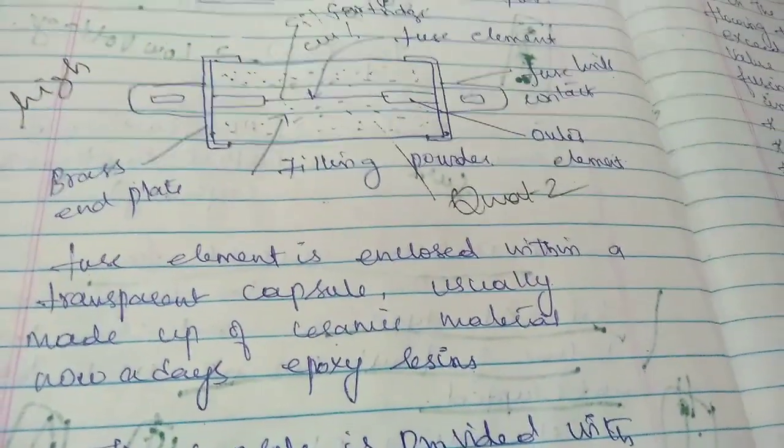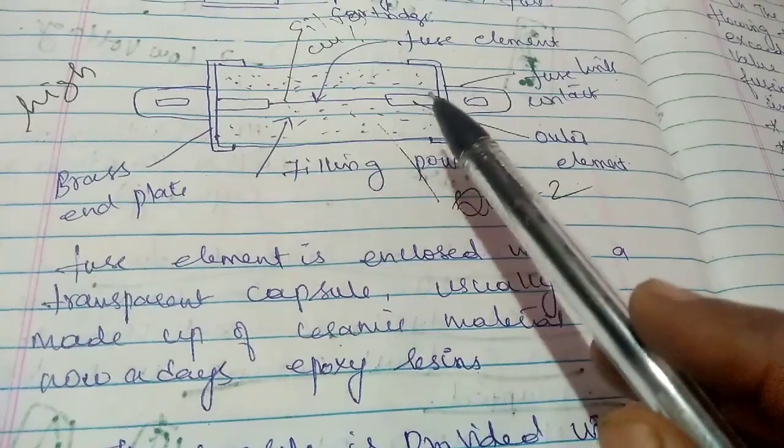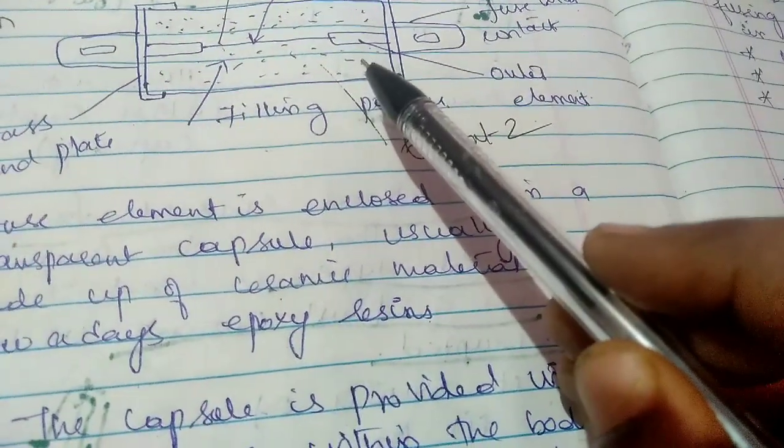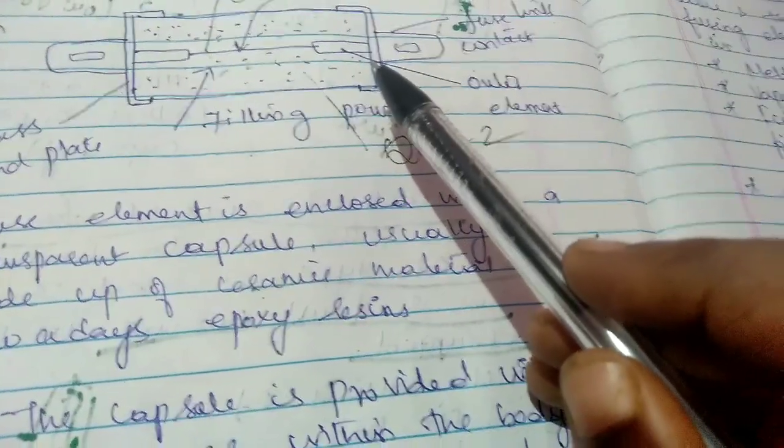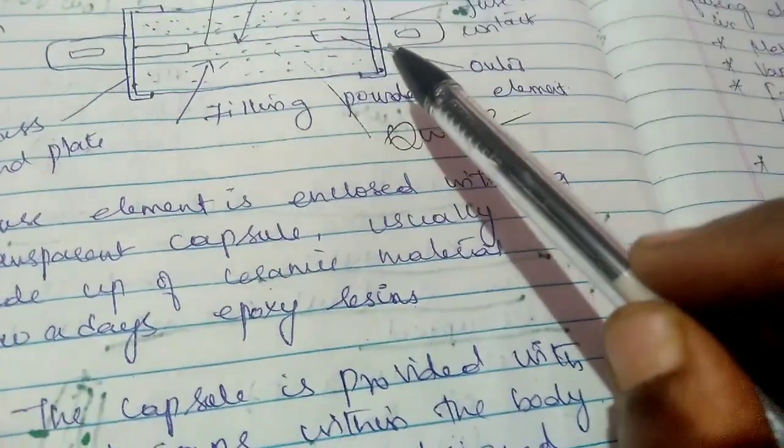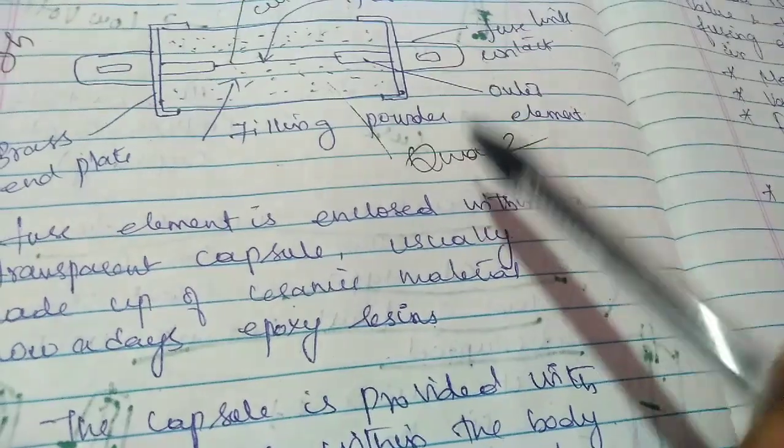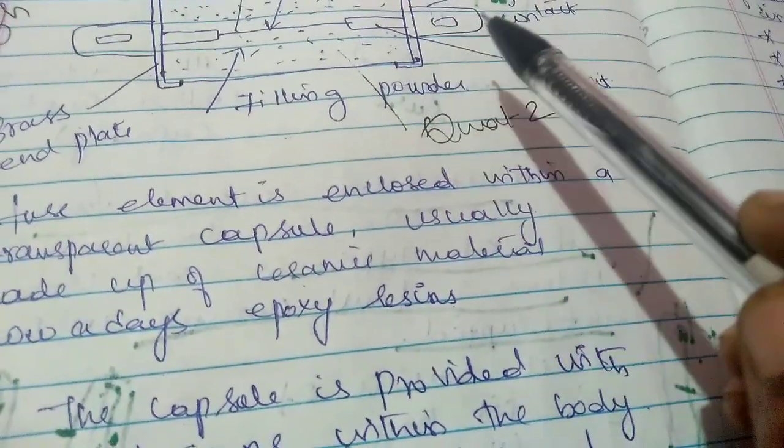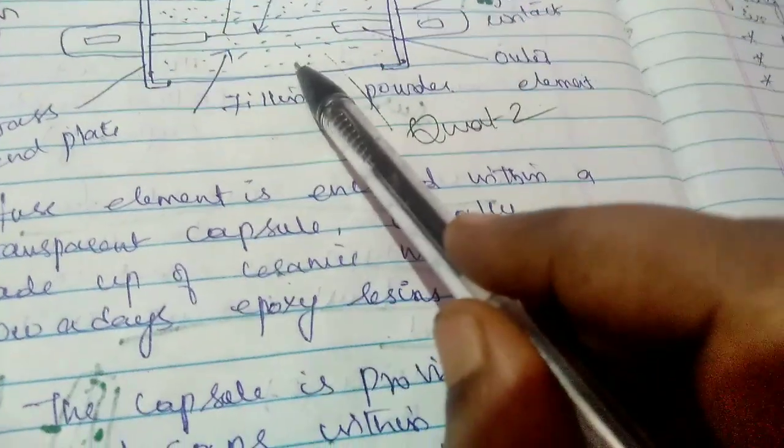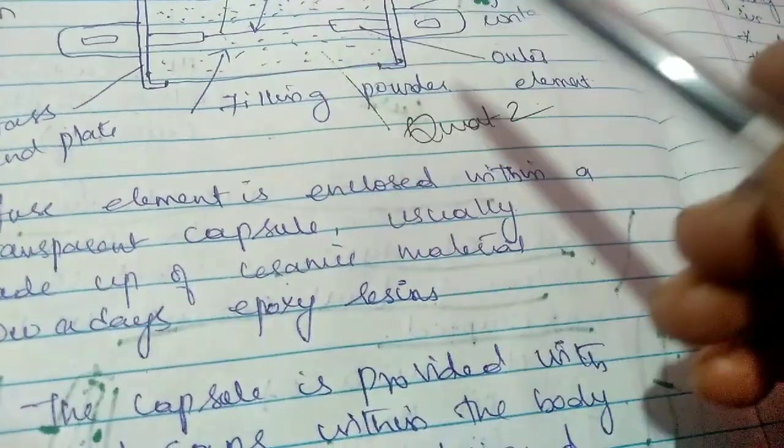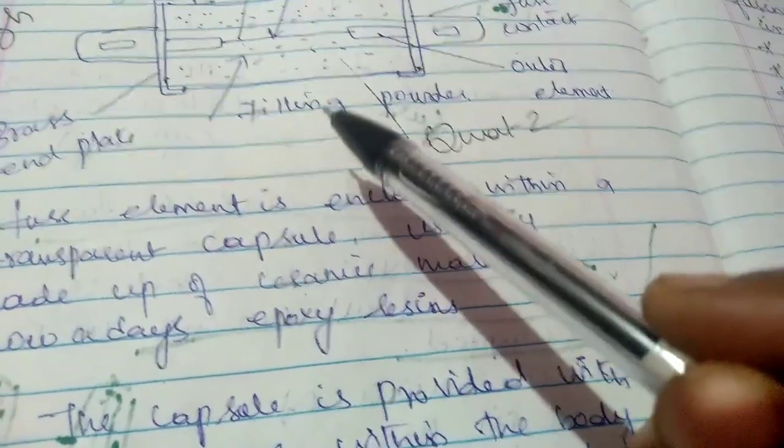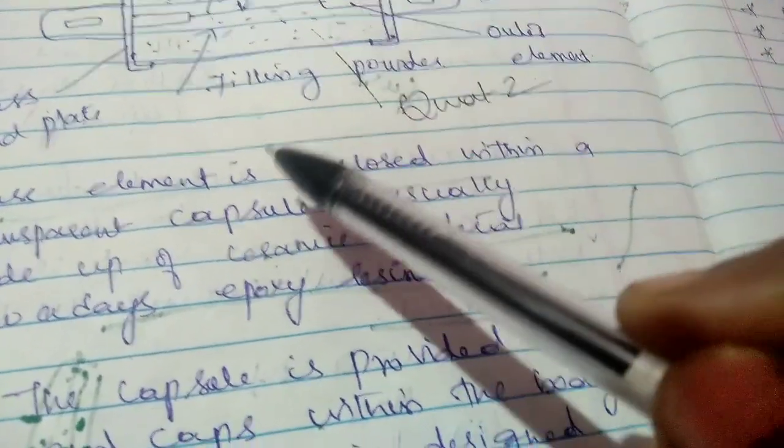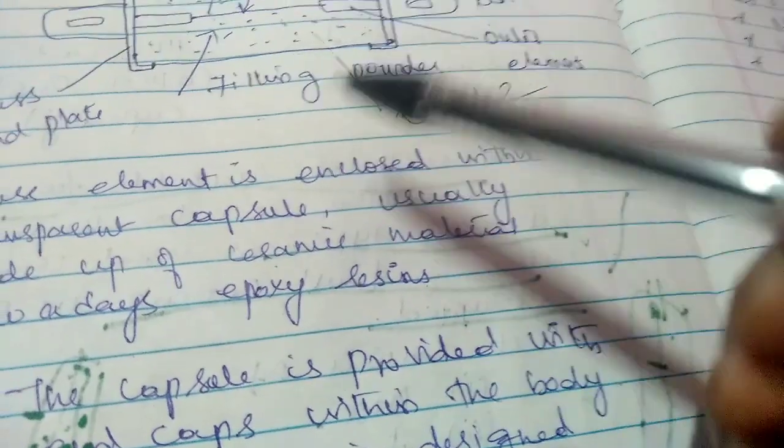This fusing element can be made up of silver or copper. At the time of fusing, when there is a fault, the current flowing through the fusing element would exceed the predefined maximum value and the temperature will rise.